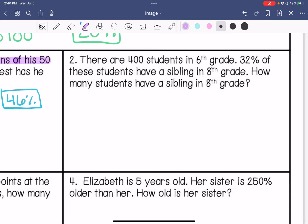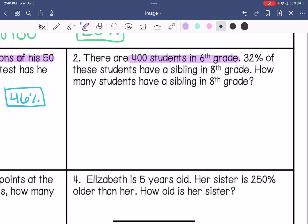Number two, there are 400 students in 6th grade. 32% of these students have a sibling in 8th grade. How many students have a sibling in 8th grade? So my part over whole, we do not know our part. We know our whole is 400 students. We know our percent is 32, and we know that percents are out of 100.